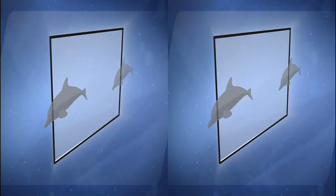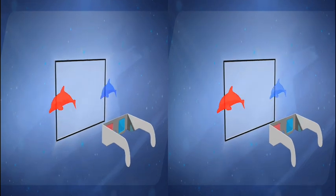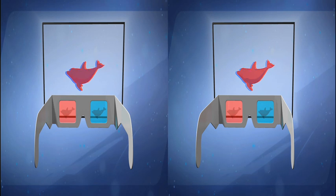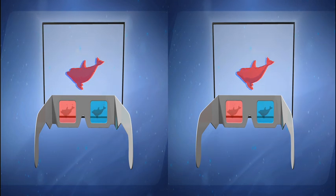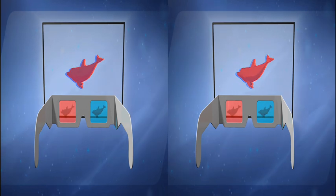One of the first ways of doing this was the anaglyph system. Red is taken out of one image and blue out of the other, and both images are shown at the same time. Viewing through anaglyph glasses tricks the brain into seeing 3D. The pictures have depth, but inaccurate colours, which is why anaglyphs fell out of favour.